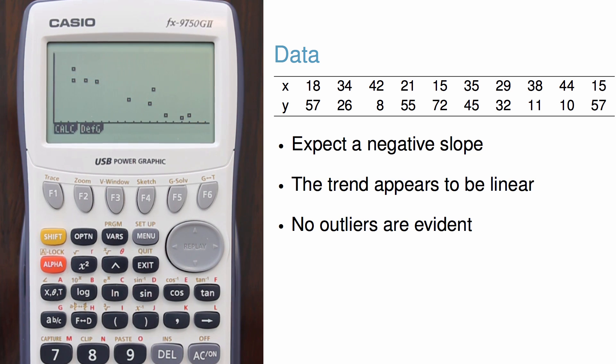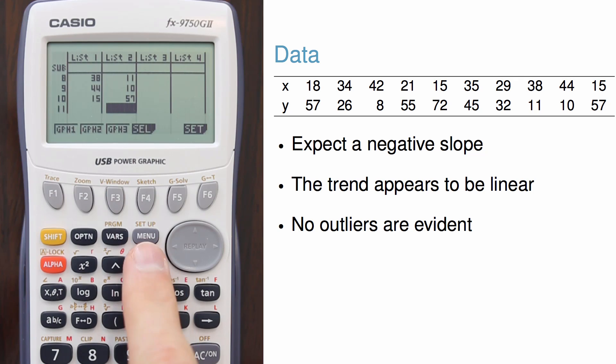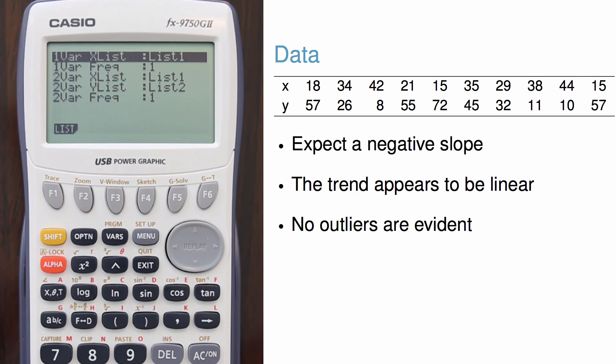Alright, now that I've checked that the data look reasonable for fitting a regression line, I'll exit out, go to calc, then to set, and I'll specify the regression context. I need to make sure the proper lists are set, just like I did when I was graphing.